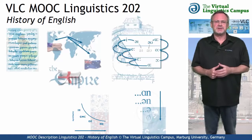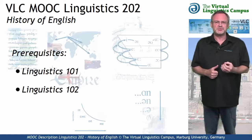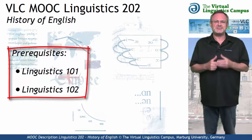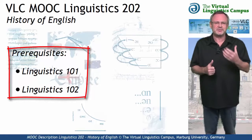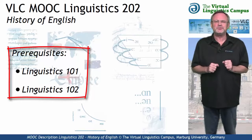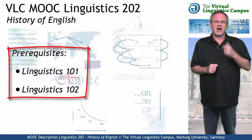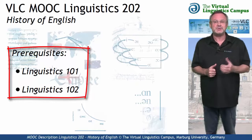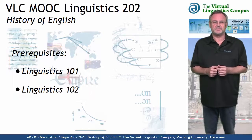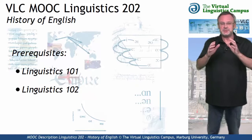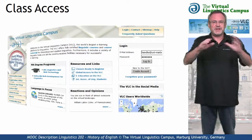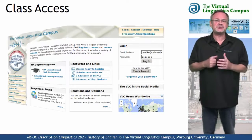Before you start, it is important to know that without a solid background in linguistics and in particular in phonetics, there is no point in doing this PMOOC. Our recommendation is to do our classes Linguistics 101 and Linguistics 102 beforehand. If you satisfy these prerequisites, fine, and you can access the class as usual.